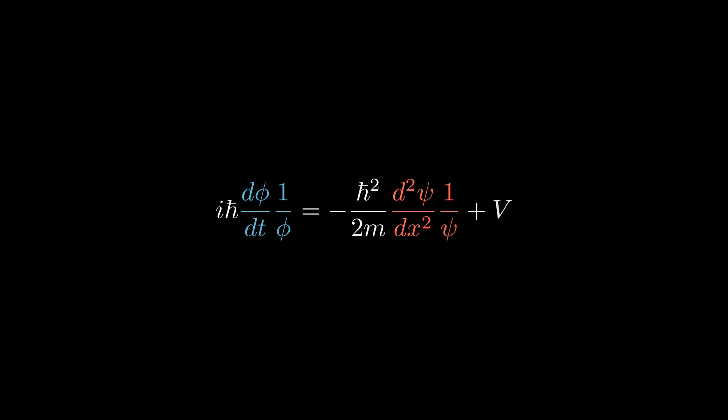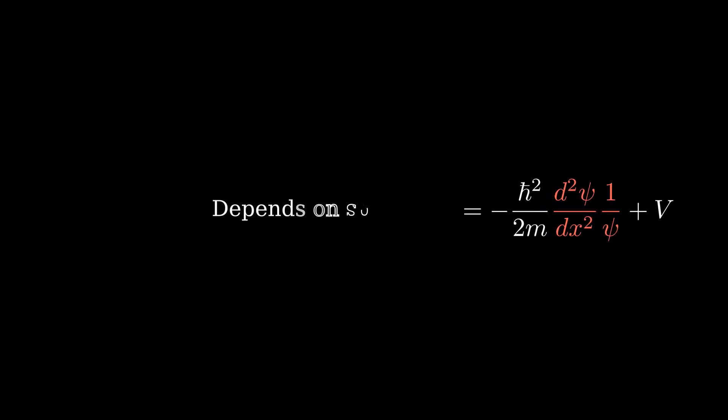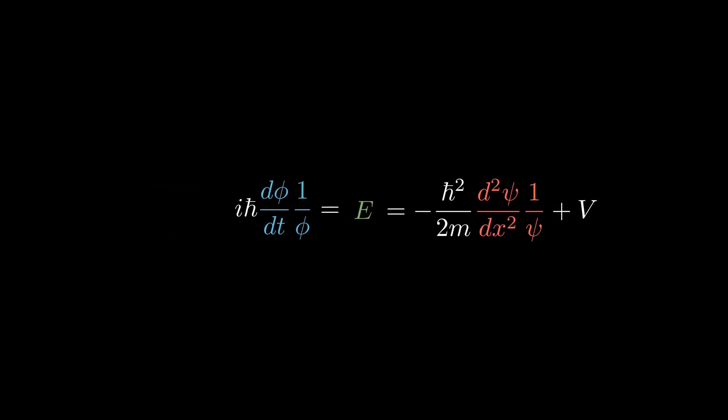The key jump here arises from the fact that we have two ordinary differential equations. One is dependent only on time, and the other only on space. As such, we can set both of them equal to a constant, which we'll call E, and this will represent the energy eigenvalues of stationary states. How can we do this? Why are they equal to a constant?